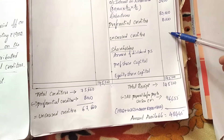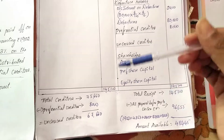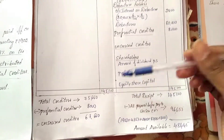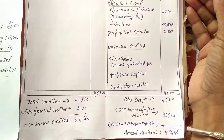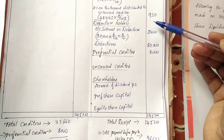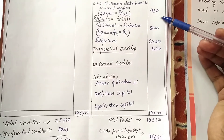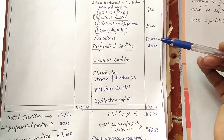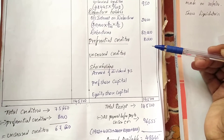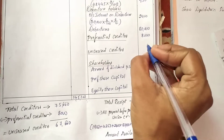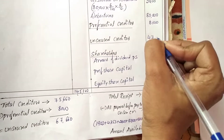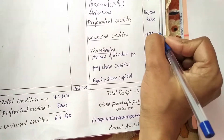Final balance calculation: total cash 1,45,100 minus liquidation expenses 1,902, minus remuneration 4,353, minus 950, minus debenture interest 2,400, minus debentures 80,000, minus preferential creditors 8,000. The resulting balance available for unsecured creditors is rupees 47,495, which is paid out as a partial distribution since full payment of 67,660 is not possible.